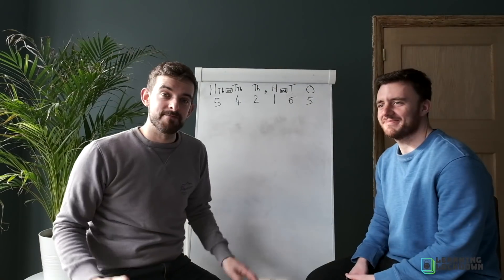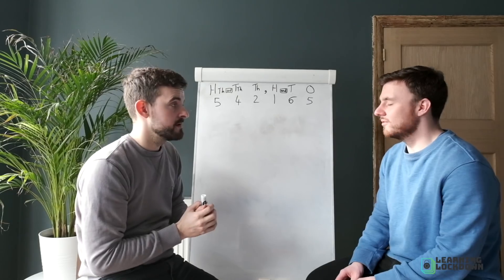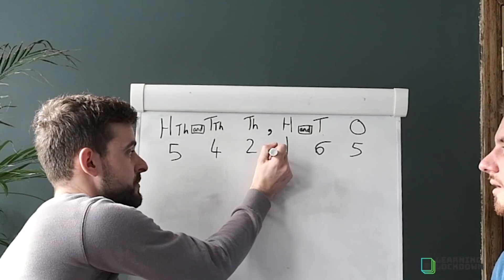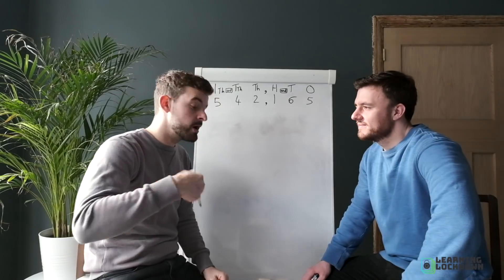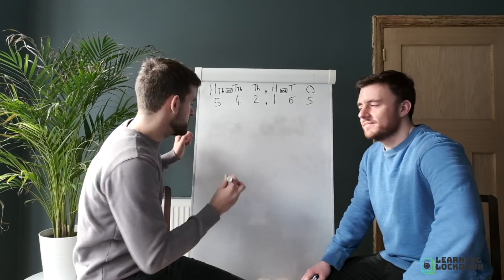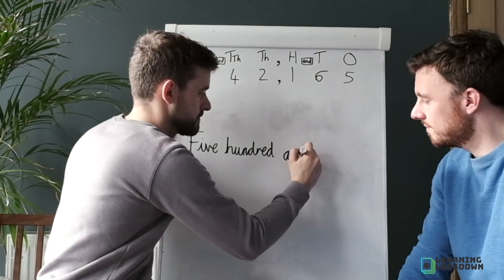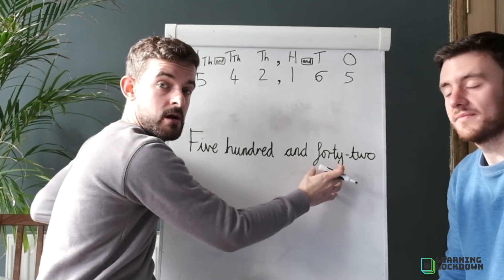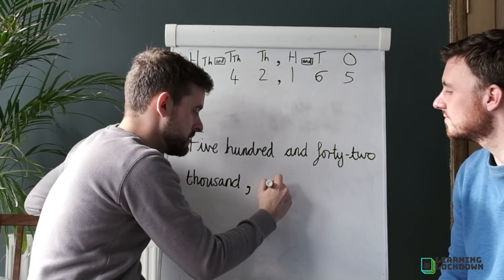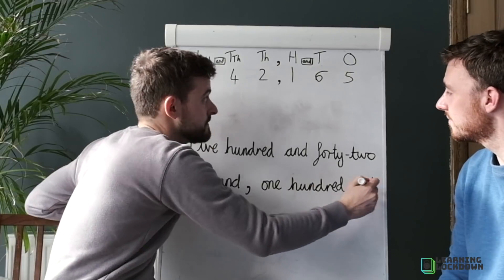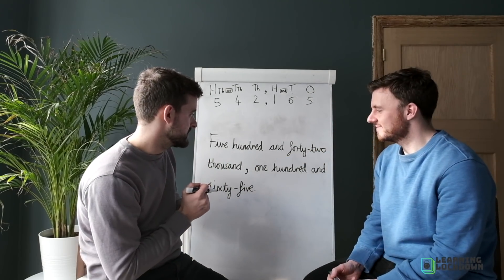Mr S, give me six digits. If we block out the last three digits we see the thousands family: five hundred and forty-two. Because they're in the thousands family: five hundred and forty-two thousand. Then the remaining digits: one hundred and sixty-five. Full number: five hundred and forty-two thousand, one hundred and sixty-five. Writing it as words — capital letters and good handwriting: Five hundred and forty-two thousand, comma, one hundred and sixty-five. Use a hyphen to join tens and ones.